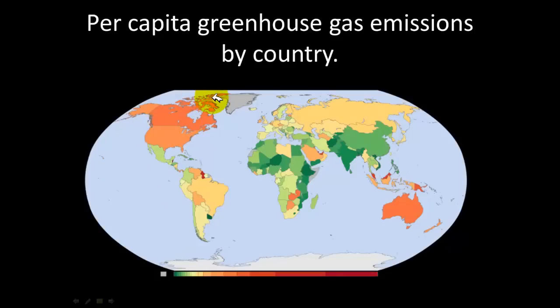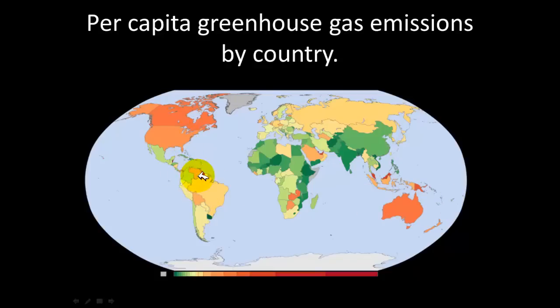This map shows per capita greenhouse gas emissions by country. We can see that the United States and Canada emit a lot of greenhouse gases, as do other industrialized nations. Australia and the United States are among those emitting the most.